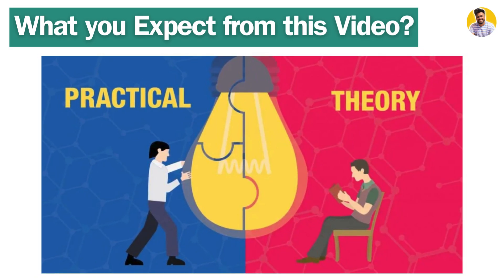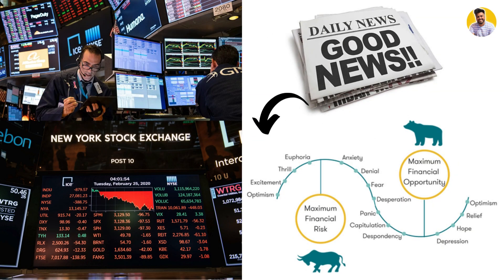This video covers the full financial news summarizer project. Let's get to the theory first. You know that news can affect the stock market — positive news can make the market go up and negative news can make it go down. What if I tell you that you can build a Generative AI based system that can tell you the sentiment of a market or a company based on the latest news happening right now?